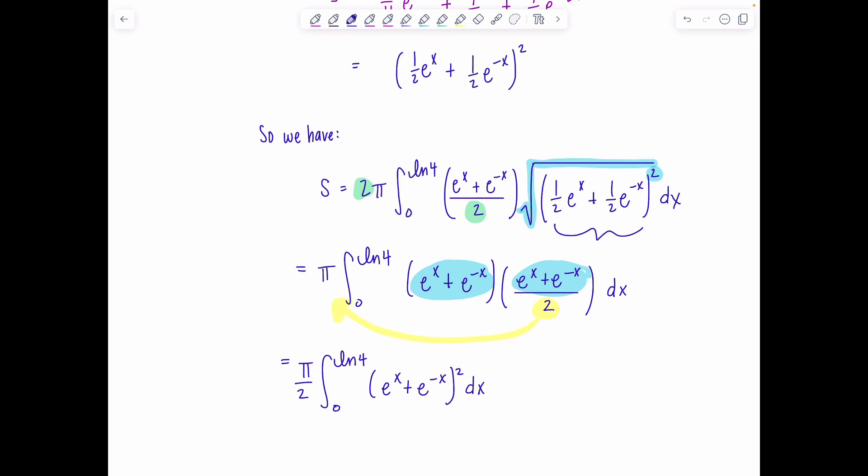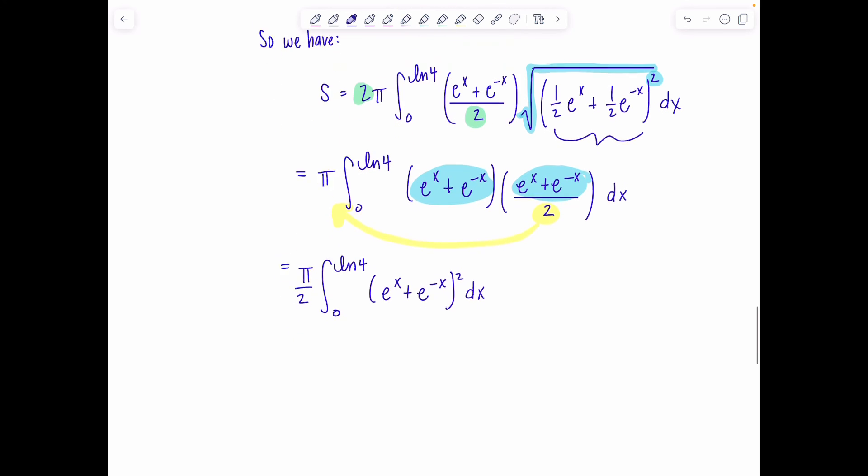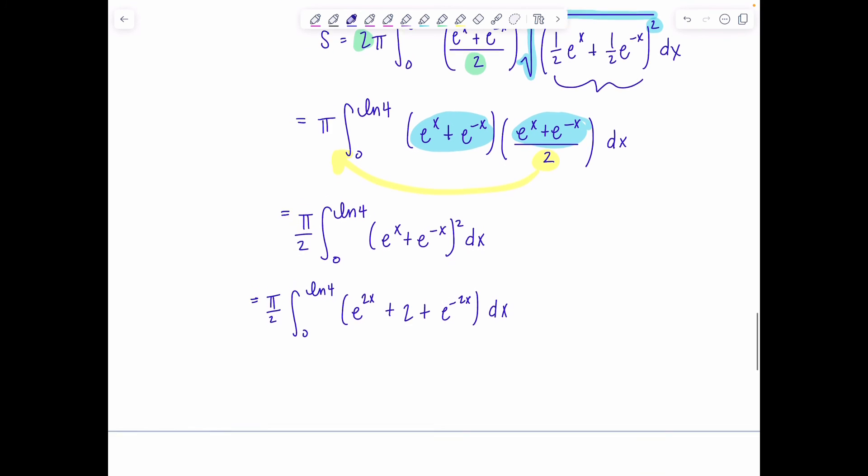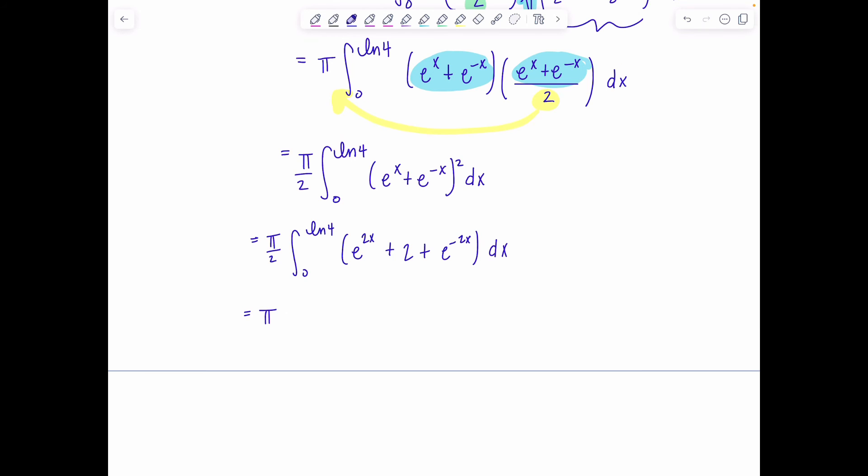We're almost there. We're going to foil this out. So π over 2, 0 to ln of 4. I'll have e to the 2x plus e to the x times e to the negative x is going to be e to the 0, which is 1. And then I double it. Square the last term. It's e to the negative 2x dx. And then now we're ready. We can integrate. This is π over 2 times 1 half e to the 2x plus 2x minus 1 half e to the negative 2x from 0 to ln of 4.